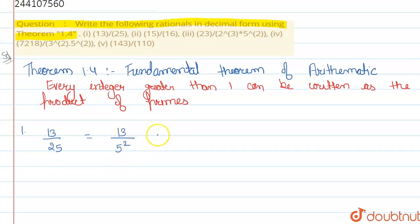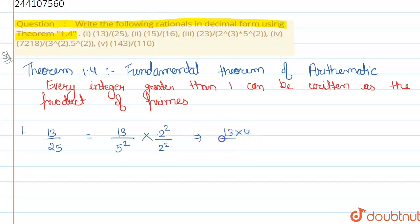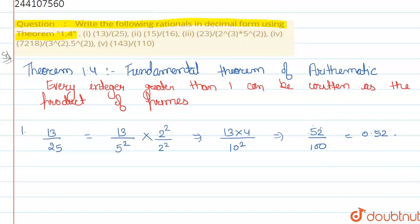So we have to convert it into decimal form. For the denominator, we multiply 2s and 5s together to make powers of 10. We count the digits and place the decimal point, so the answer is 0.5.